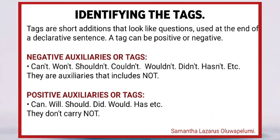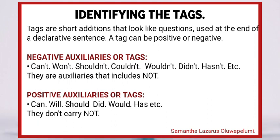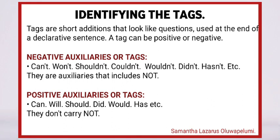When a tag denotes negativity, it includes 'not.' It could be contracted or shortened. When I say contracted, I mean 'can't' — the full expression is 'cannot,' and the contracted form is 'can't.' So anytime you have can't, won't, shouldn't, couldn't, etc., you should know that it denotes negativity. Positive auxiliaries or tags — can, will, should, did, would, has, etc. — denote positivity, hence they are classified under the positive tags or auxiliaries.